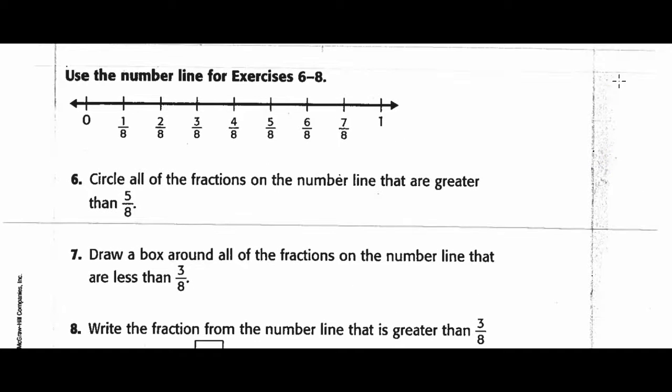Use the number line. So, circle all the fractions on the number line that are greater than five-eighths. So, here's five-eighths. All the fractions that are greater than five-eighths are this way. So, it would be six, seven, eight, and obviously one, because one is eight over eight.